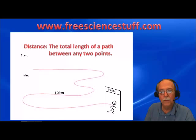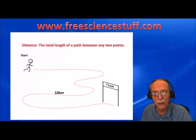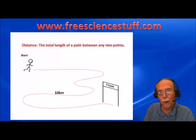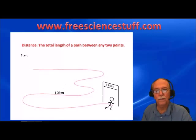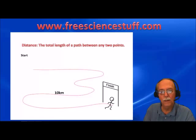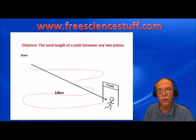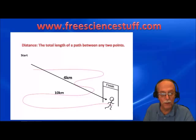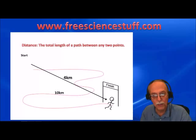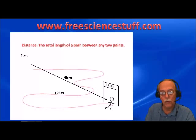Now let's look at this a little differently. Mo was a little oppositional — he thinks he can beat everybody by taking a shortcut. What if he runs directly from the start to the finish line in a straight line? That straight line shows the total length of the path between the two points, so it does show his distance. That distance, by the way, is four kilometers.